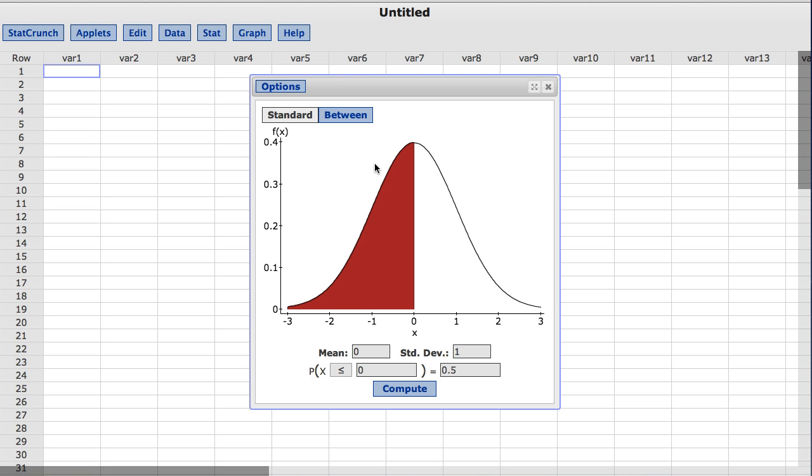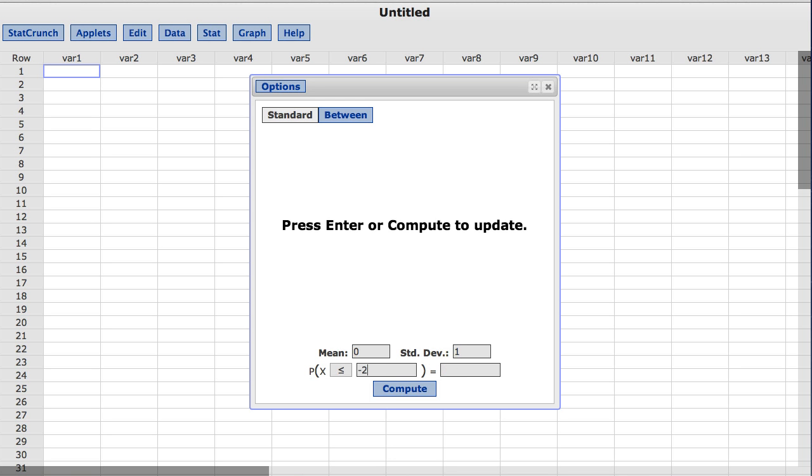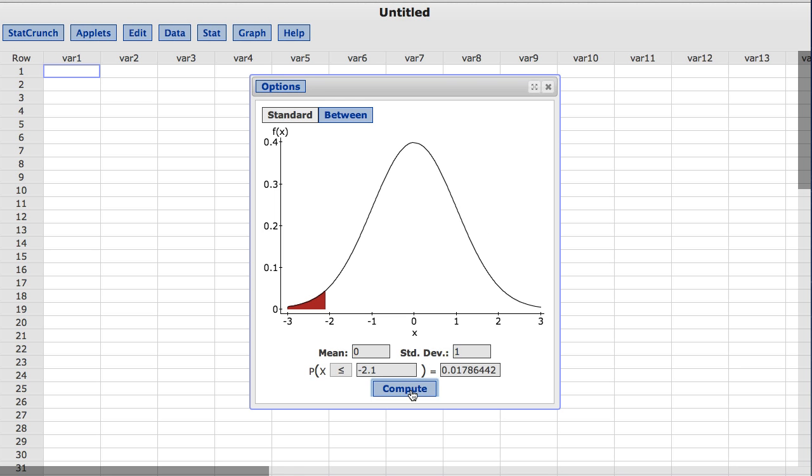Now let's compute a probability associated with another reference value. I am going to type negative 2.1 for the reference value, which is the box to the right of the less than or equal to sign. I will now click Compute. And as you can see, the probability of being less than or equal to negative 2.1 is computed to be approximately 0.018. Another way of thinking about this result is that approximately 1.8% of the area under this distribution is below negative 2.1.